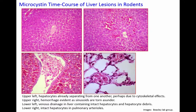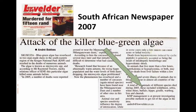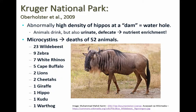Here is a news story about a cyanobacteria — Microcystis in particular — that killed a wide range of wildlife species in Kruger National Park, the largest national park in South Africa. One hazard of providing water holes is that animals congregate, urinate, defecate, and enrich the water source, allowing a cyanobacterial bloom to arise. In this problem at Kruger Park, a total of 52 animals died, especially wildebeest and zebra, endangered white rhinos, cape buffaloes, lions, cheetahs, a giraffe, a hippo, kudu, and a warthog.